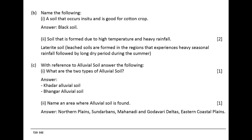Name the following. A soil that occurs in situ and is good for cotton crop. Answer: black soil. Soil that is formed due to high temperature and heavy rainfall. Answer: laterite soil. Leached soils are formed in regions that experience heavy seasonal rainfall followed by a long dry period during summer.